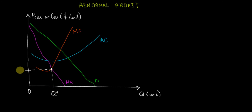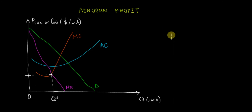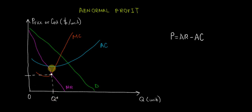At this point, this is the marginal cost level of producing the very last unit. However, when we consider the profit, we want to take the difference between the average revenue and the average cost. So the profit per unit is going to be equal to the average revenue minus the average cost.